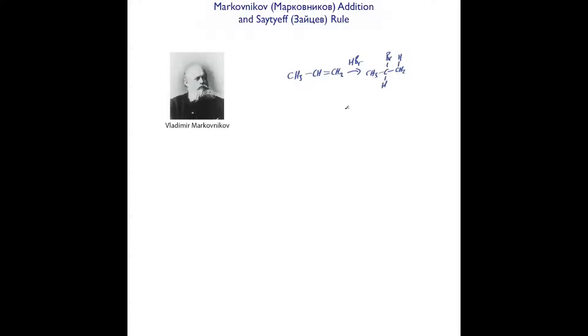What Markovnikov discovered was that when you add something like hydrogen bromide or hydrogen chloride across a double bond, the predominant molecule you get will have bromine on this carbon here and not this carbon. So why is that?